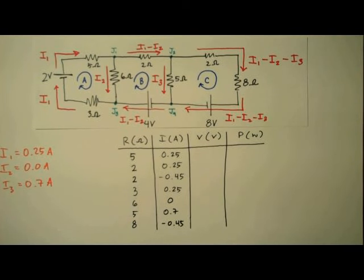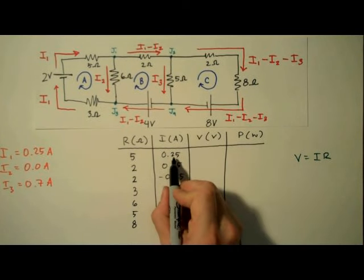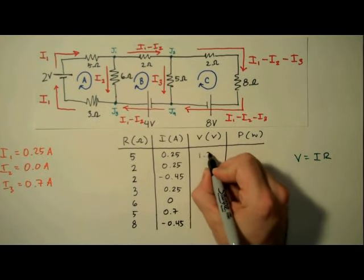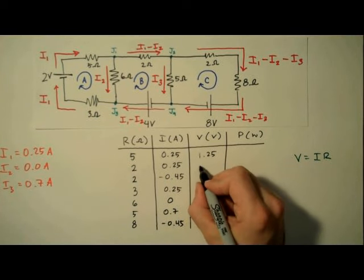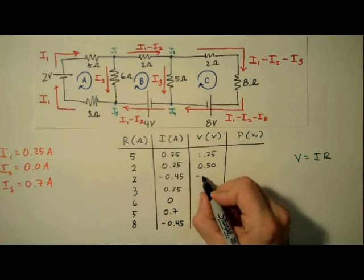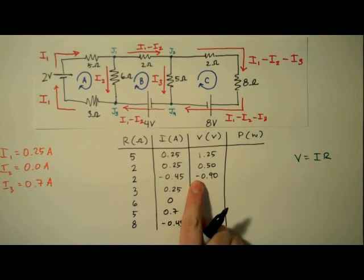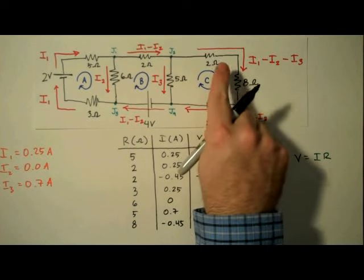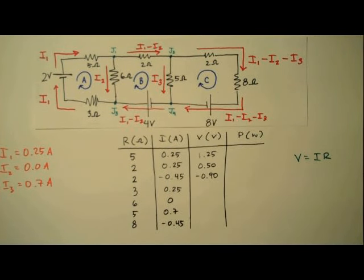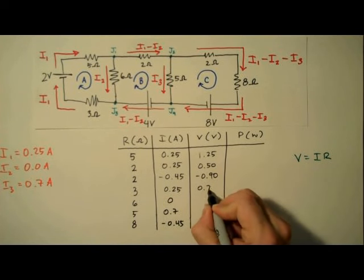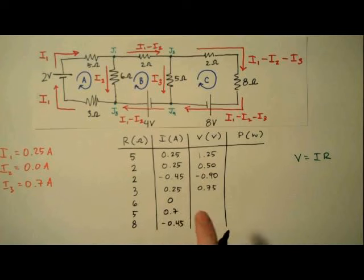Now that we have all these currents, we can use Ohm's law to determine the voltages across our resistors. And now you can see why we use the table. We just need to multiply columns. So this first product is equal to 1.25 volts. The product of the second two numbers here is 0.50. Here we have negative 0.90 volts. This negative sign is actually telling us that the direction of the voltage drop is right to left, not left to right like we had assumed. Our next product is going to be 0.75 volts.